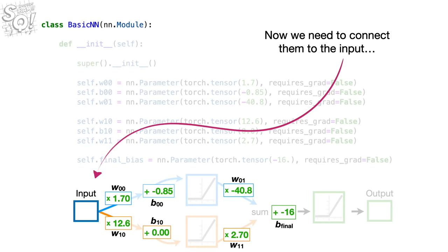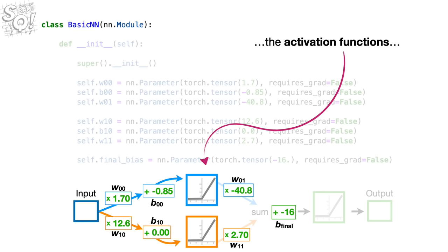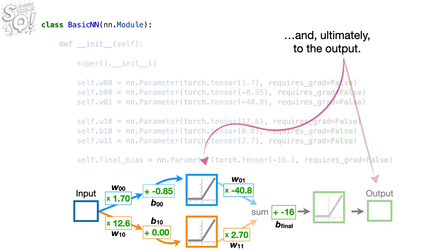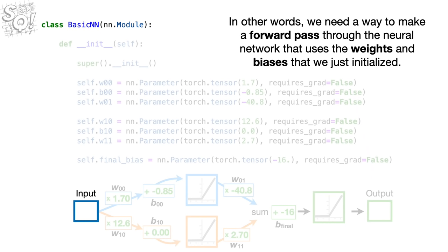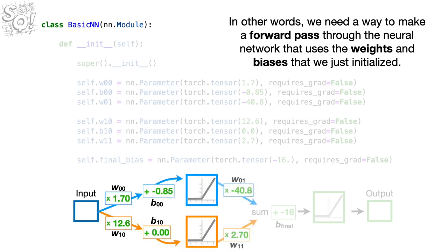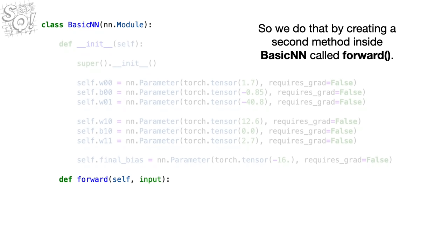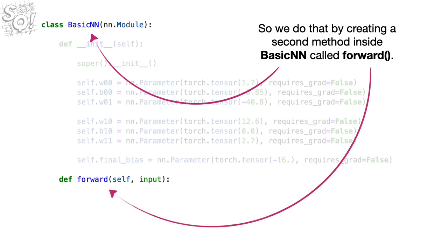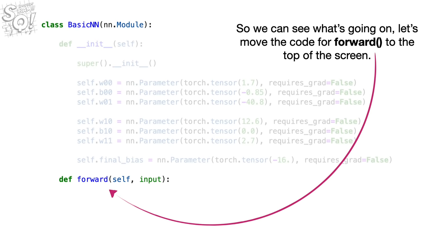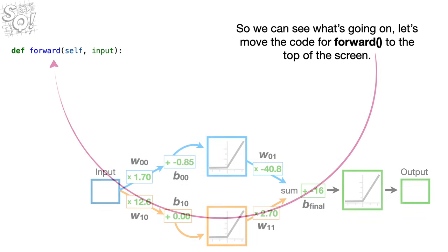Now we need to connect the weights and biases to the input, the activation functions, and ultimately to the output. We need a way to make a forward pass through the neural network using the weights and biases we just initialized. So we create a second method inside BasicNN called forward. Let's move the code for forward to the top of the screen so we can see what's going on.